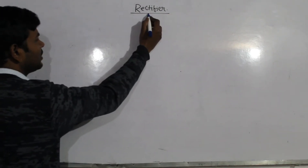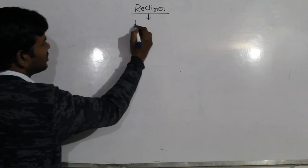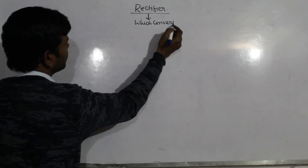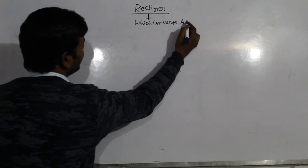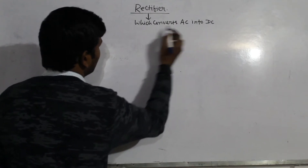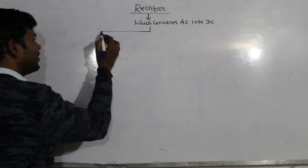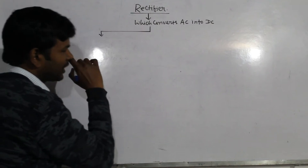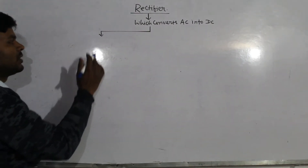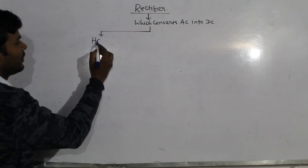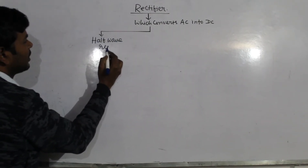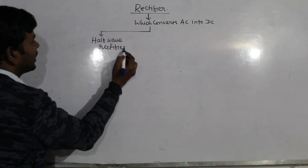What is a rectifier? A rectifier is a device which converts AC into DC — converts alternating current into direct current. Rectifier is divided into two parts: number one is the half-wave rectifier, and the other is the full-wave rectifier.